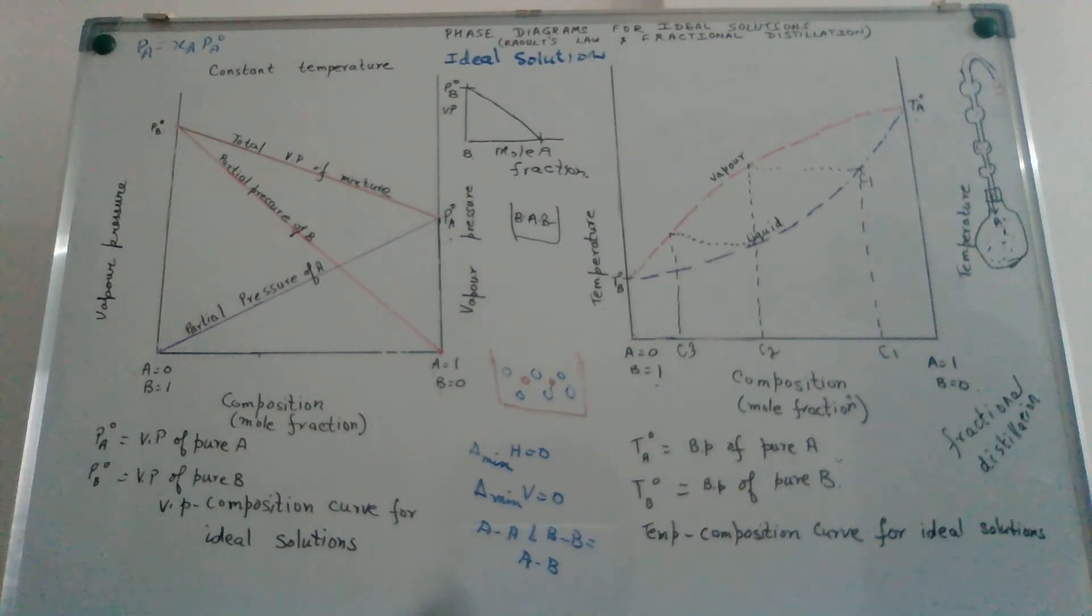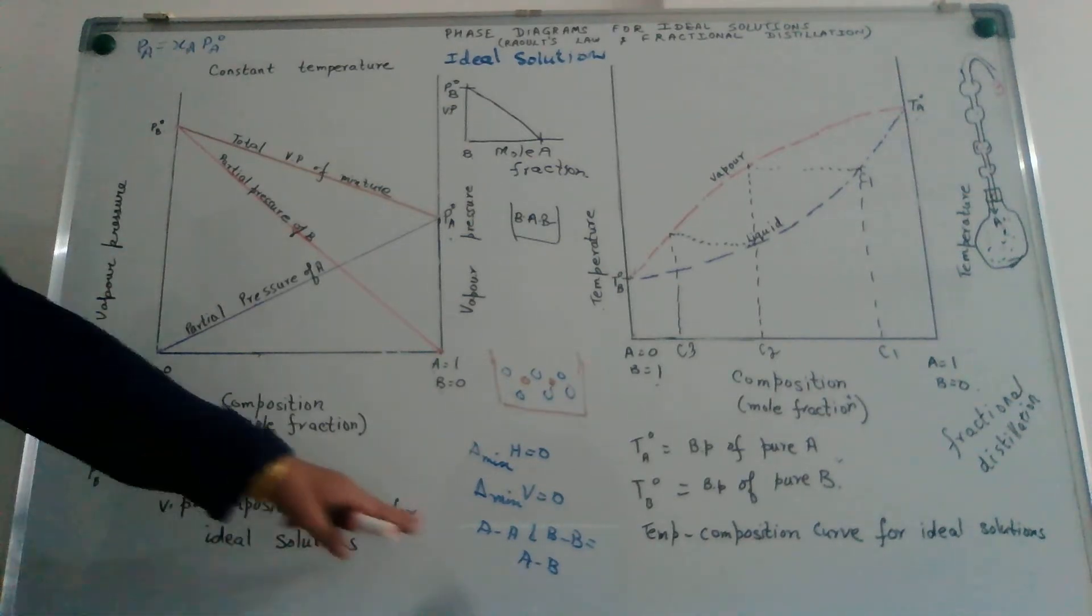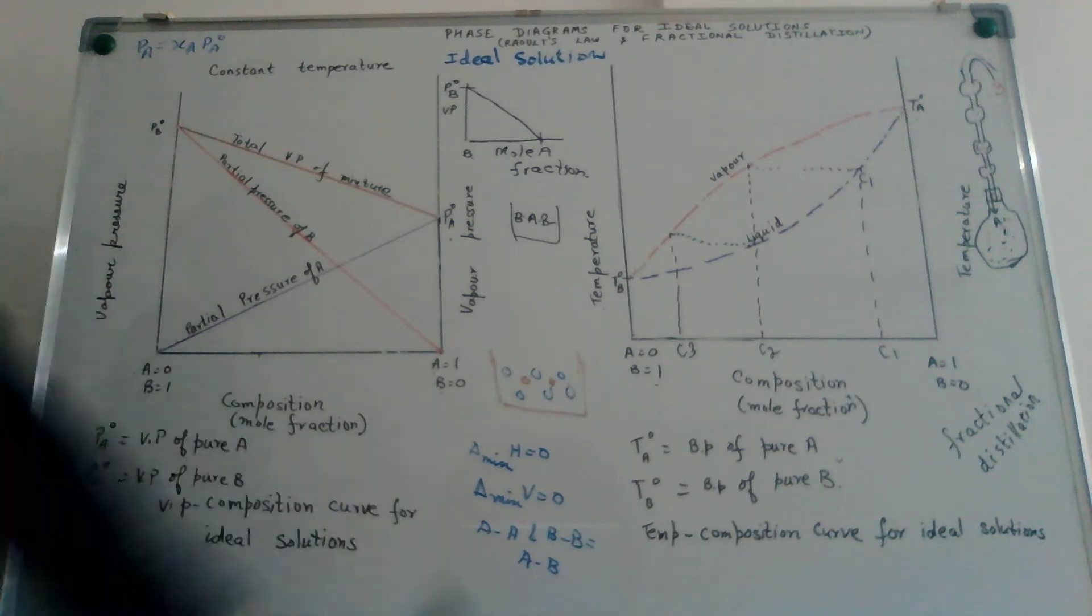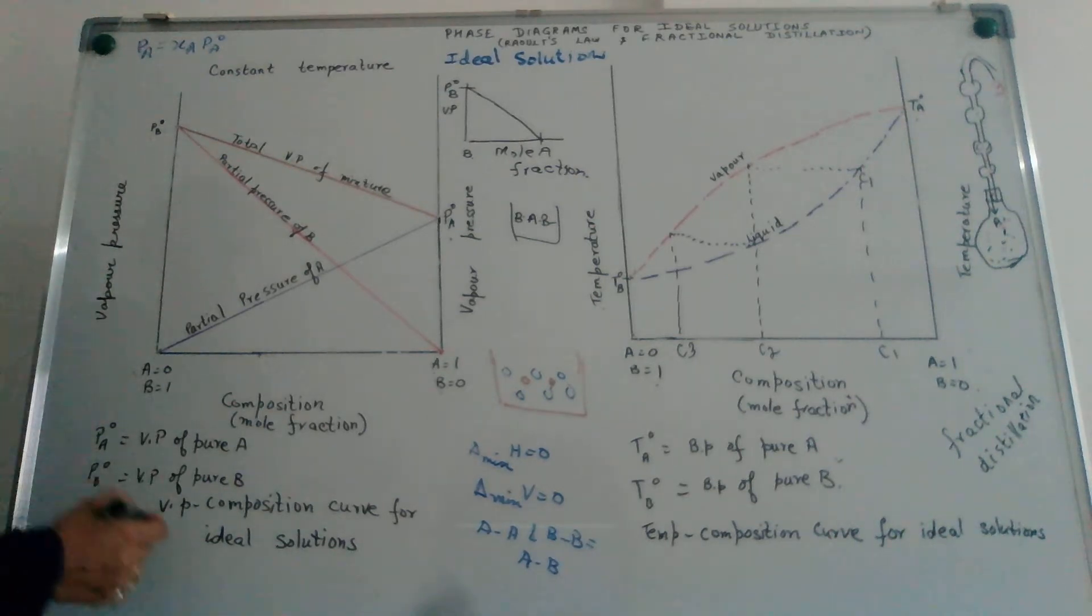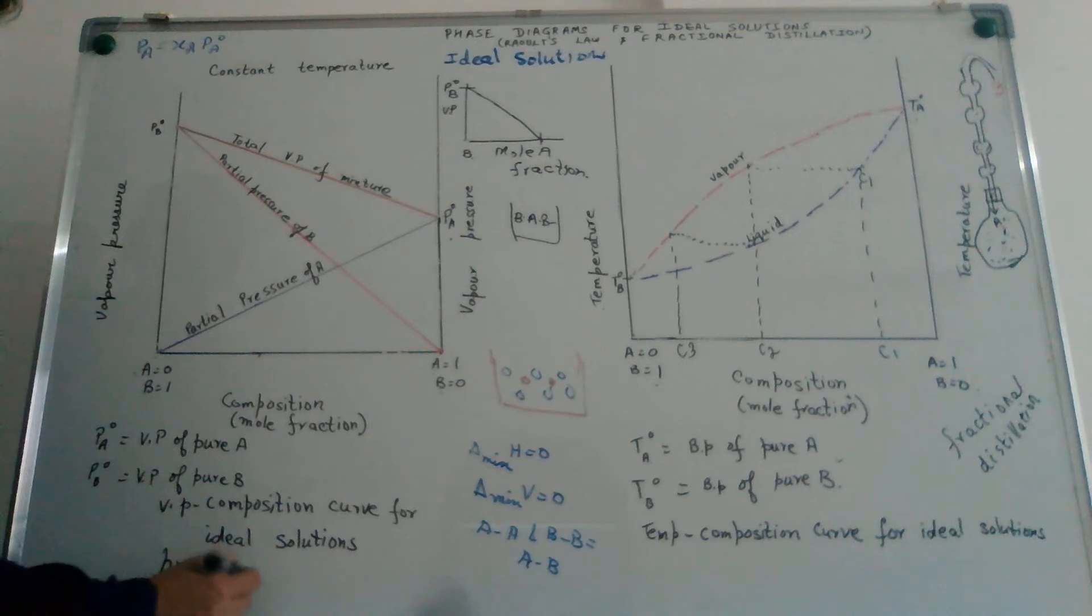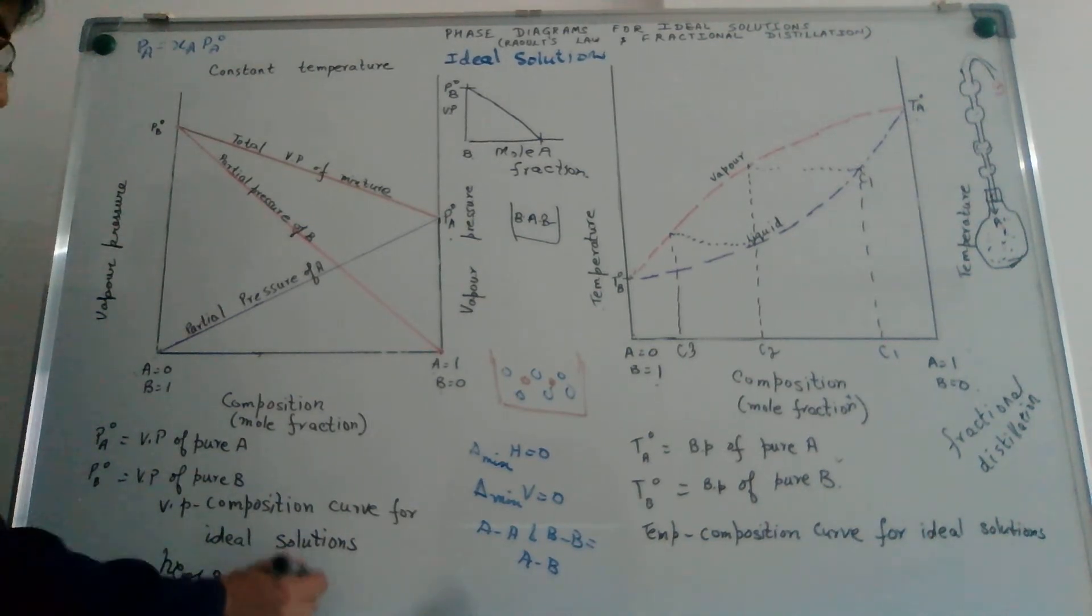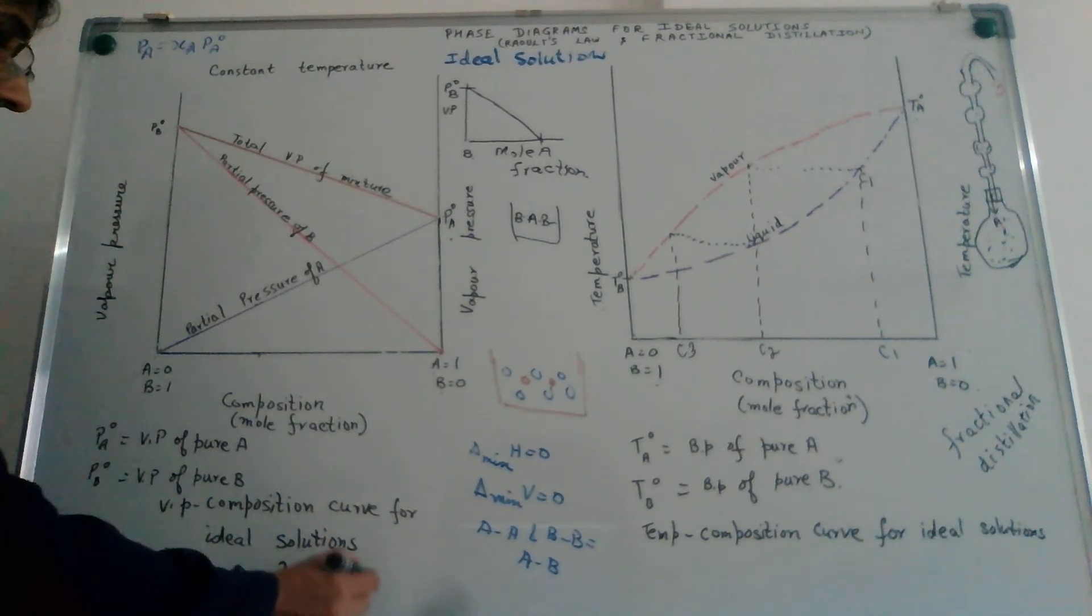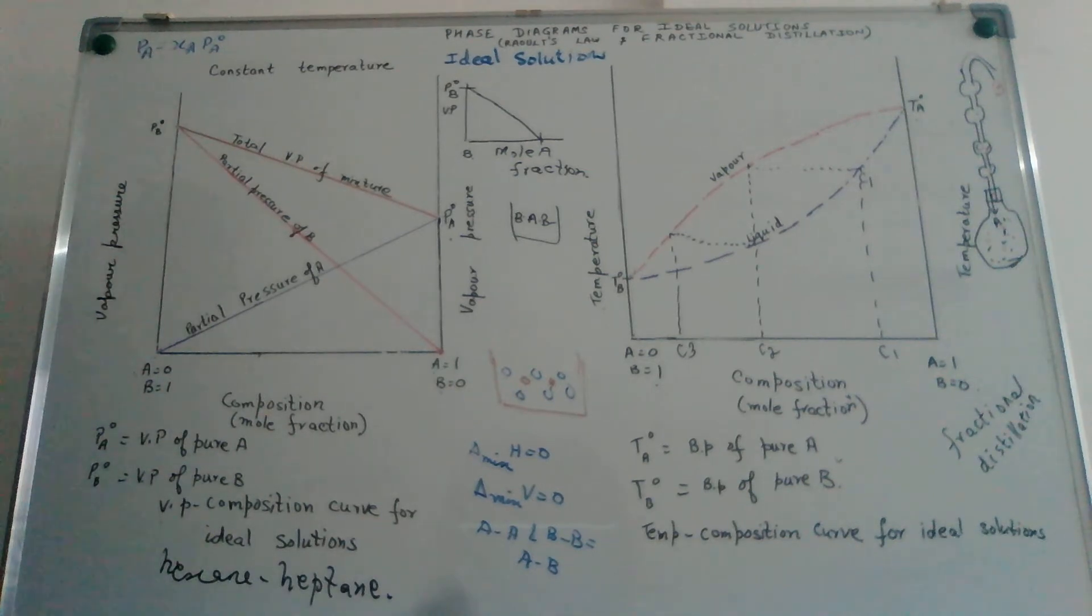This type of behavior is shown by substances when they are taken in dilute state. Since we are saying that the force of attraction between the particles is similar, we will have cases like hexane and heptane. If I take a mixture of hexane and heptane, chemically they are similar, behaviorally they are similar. Such liquid mixtures would tend to show ideal behavior.